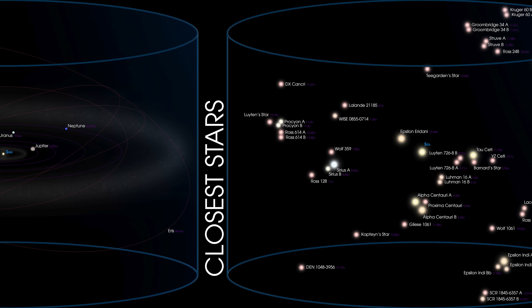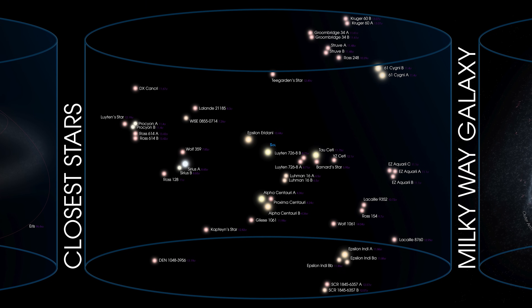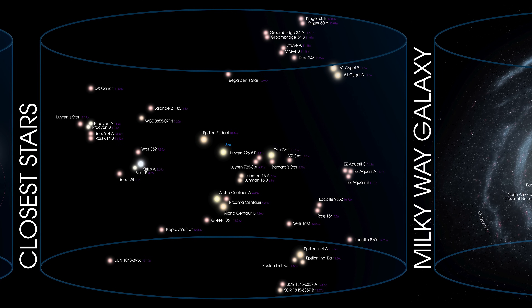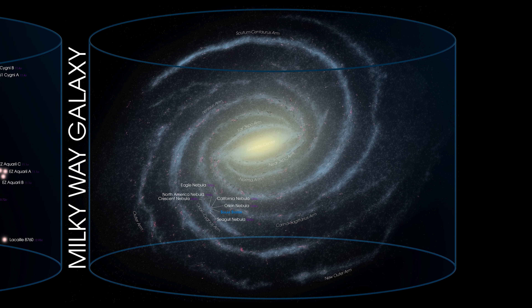Outside of the solar system, objects begin to get a bit further away. We start to measure in light years at these distances, a light year being 9.46 trillion kilometres. At this scale, we can see that there are plenty of stars in the near vicinity to us. All the stars in our galaxy make up the Milky Way galaxy, a large structure roughly 150,000 light years across.